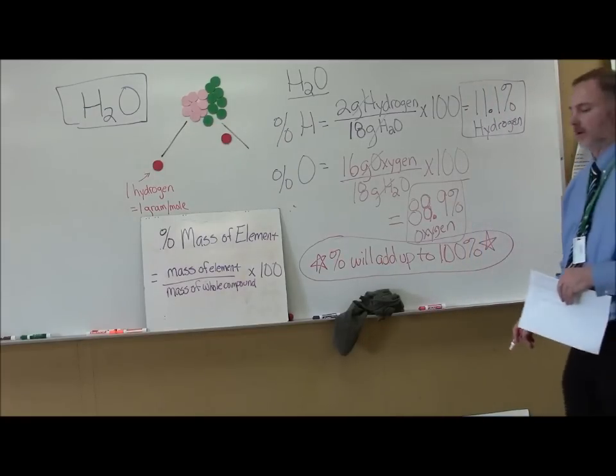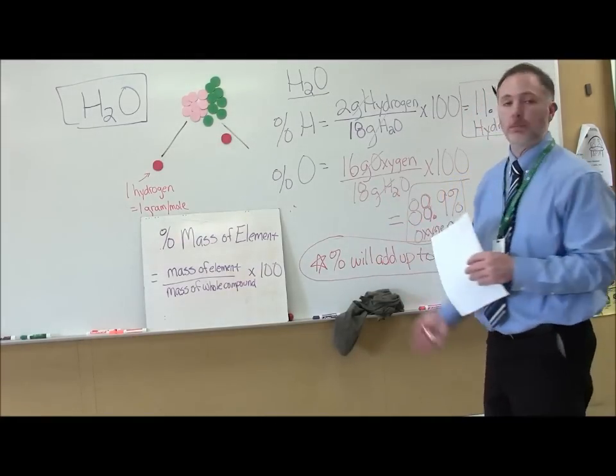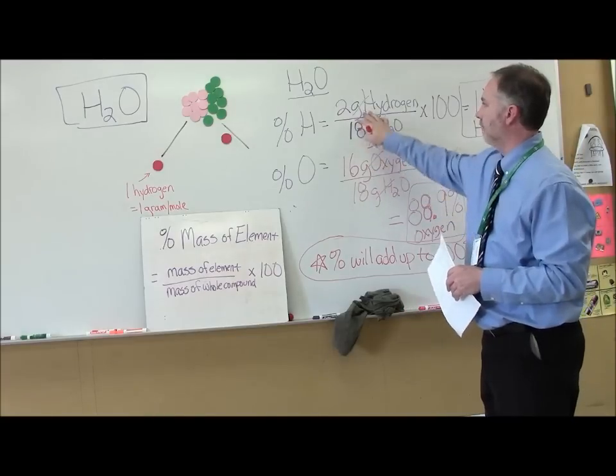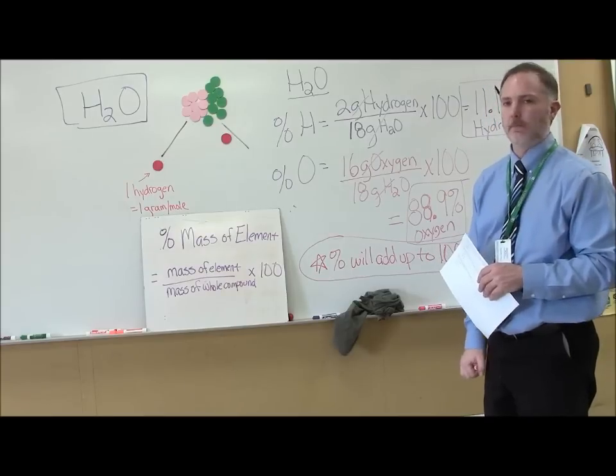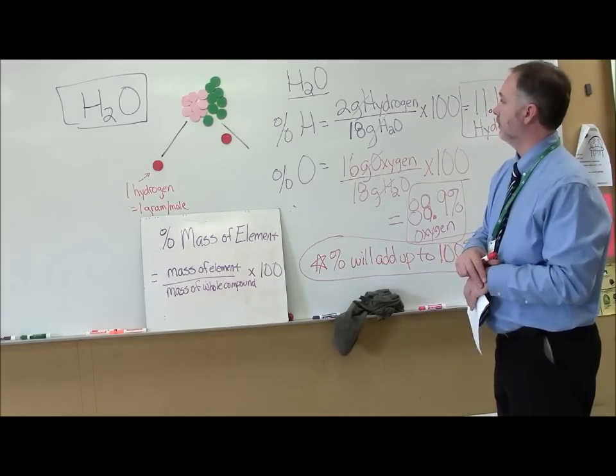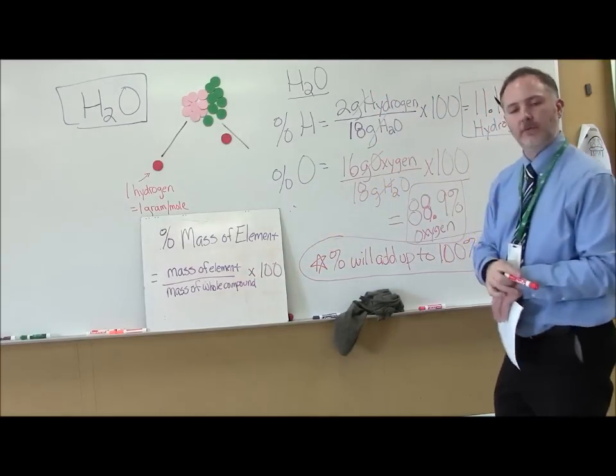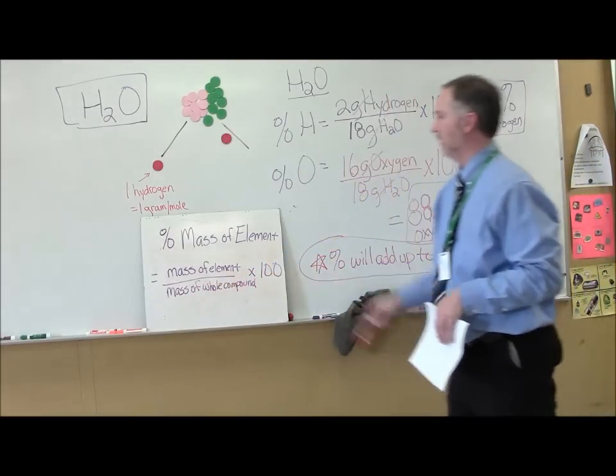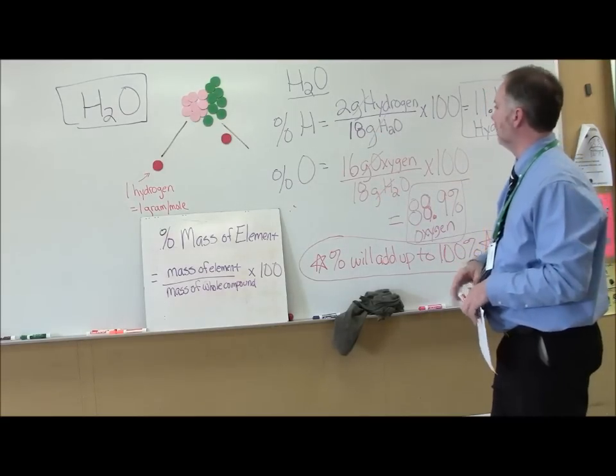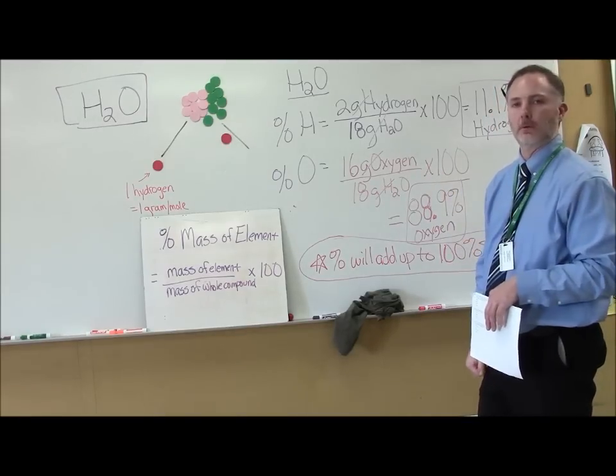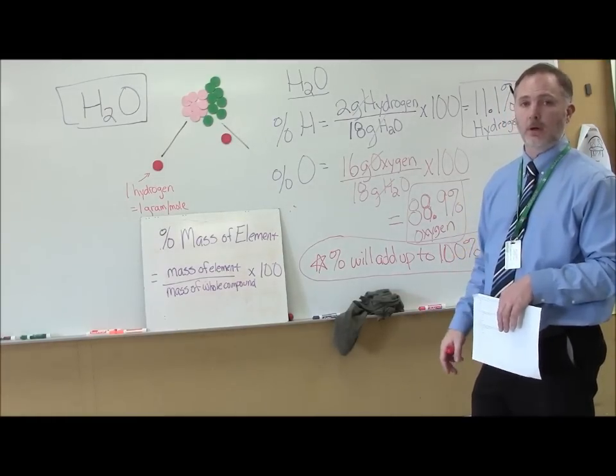That will always add up to 100%. Now, sometimes you might add them all and you might come up with 99.9% or 100.01%. If you're off by a little bit, it's fine. It just has to do with how far you're going to round each of your molar masses. And if it's not exactly at 100, but just a little bit off, that's fine. So all you do, just to repeat, you've got your mass of each element. So in water, it's 2 grams of hydrogen and 16 grams of oxygen. The mass of your whole compound, or in this case, molecule. So 18 grams is water's molar mass. 18 grams is the same number. And that's going to give you your percent mass of each element. So not too hard to do. Actually, pretty easy. Let me show you one more type of problem that you might get using percent composition.